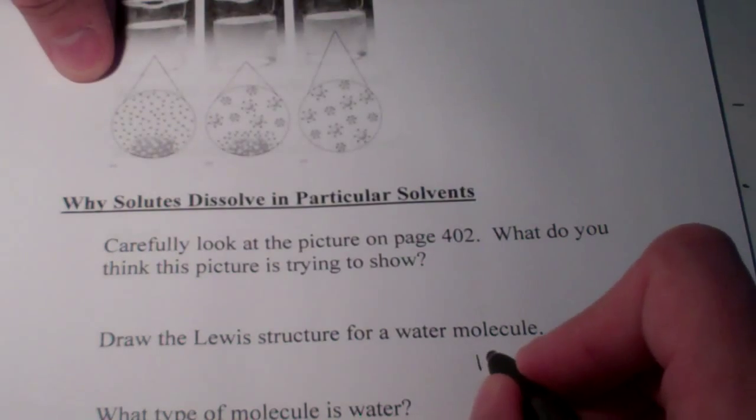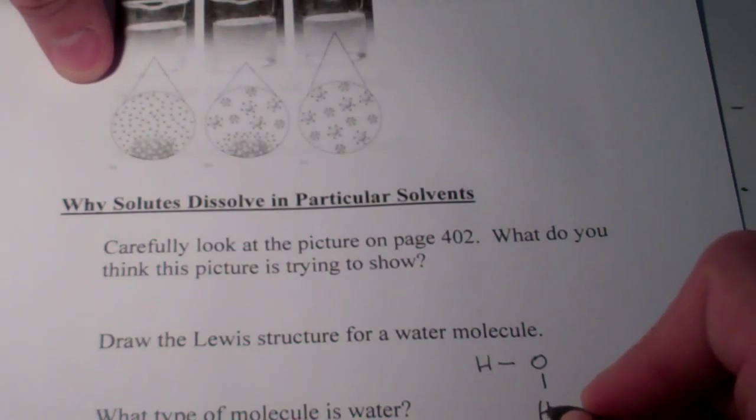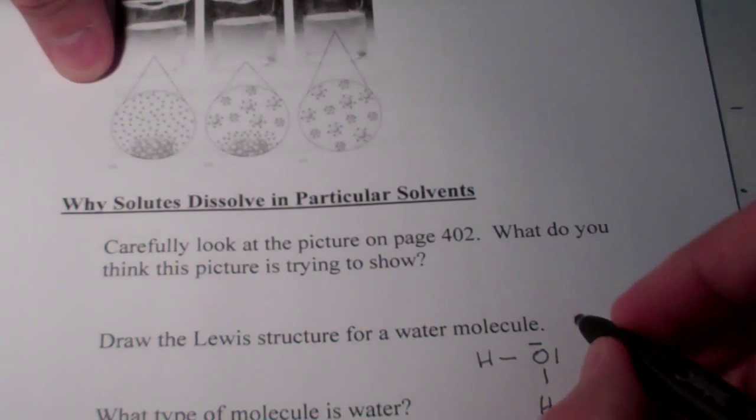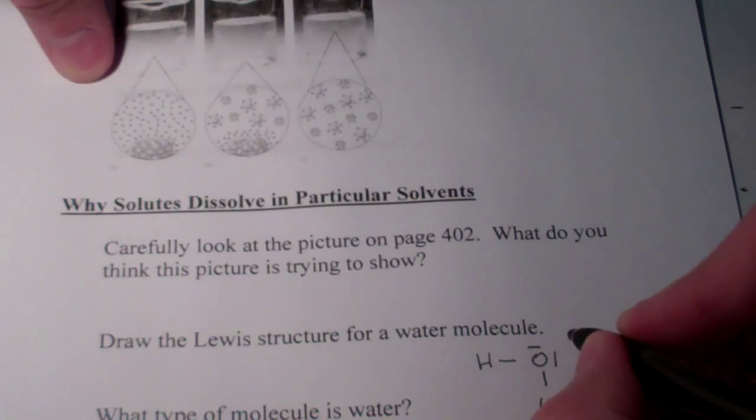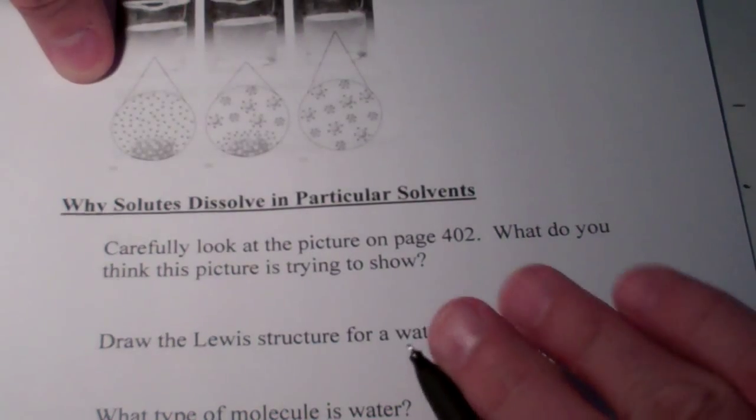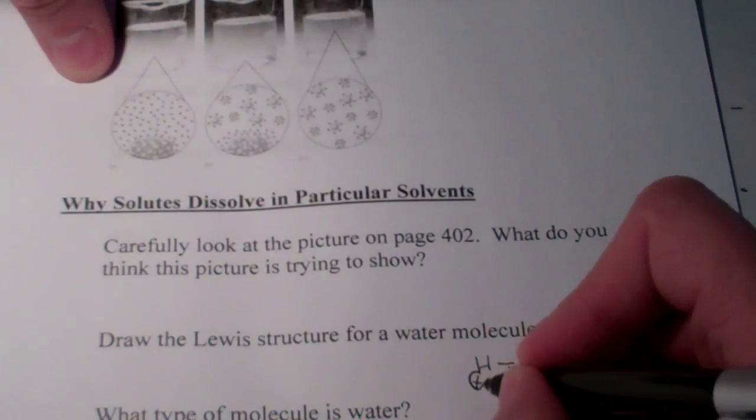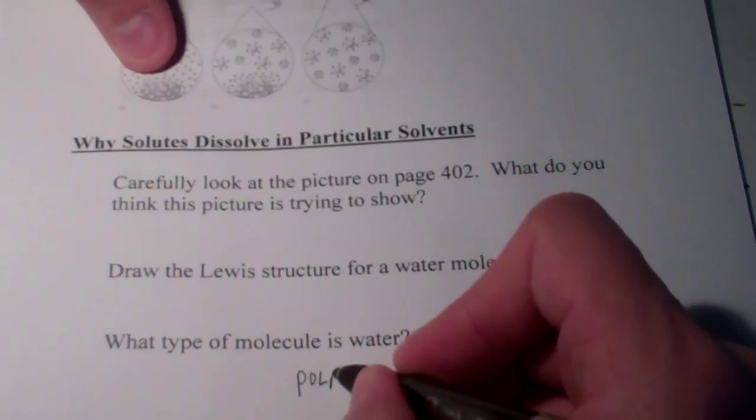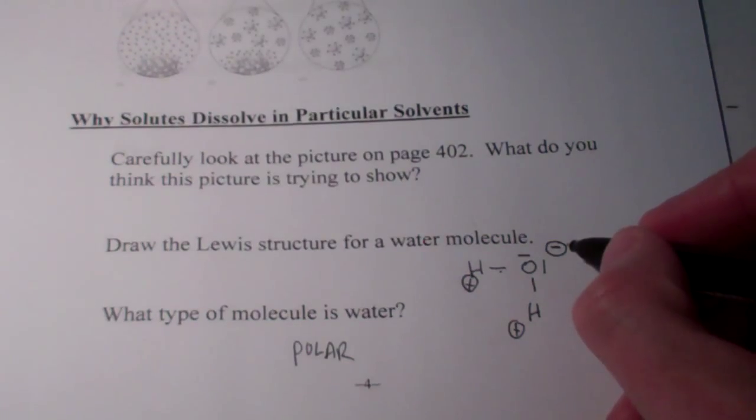If I were to draw the Lewis structure for water, as you recall, we have hydrogen bonded to oxygen and another hydrogen bonded to the oxygen. Oxygen has two non-bonding pairs of electrons on it. Because oxygen is very electronegative, these shared pairs spend more time around oxygen, giving that a negative charge. Those shared pairs are being pulled away from the hydrogens, giving this end of the molecule a positive charge. So water is a polar molecule.